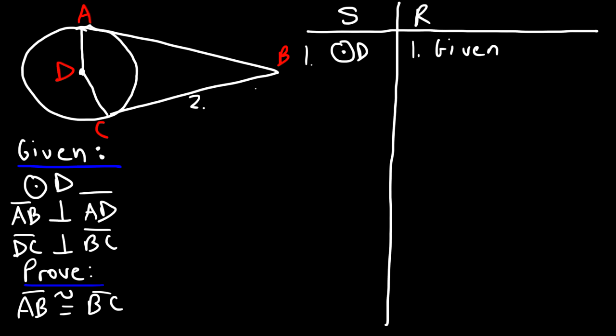In step two, we could say that AD and DC are congruent. Since D is the center of the circle, AD represents the radius and DC represents the radius, because the radius is the distance between the center and any point on the circle. The reason for this: all radii of a circle are congruent.